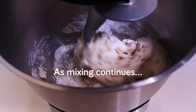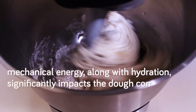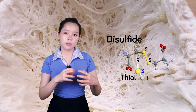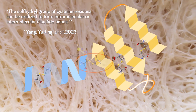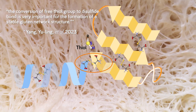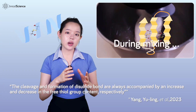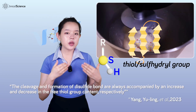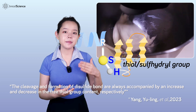As mixing continues, mechanical energy along with hydration significantly impacts the dough's components. It triggers thiol-disulfide exchange reactions within the gluten proteins. This process involves the breaking and reformation of disulfide bonds, significantly impacting the gluten network. During mixing, we can look at the free sulfhydryl group content to gain valuable insights into the dynamics of this disulfide bond formation and breakage.